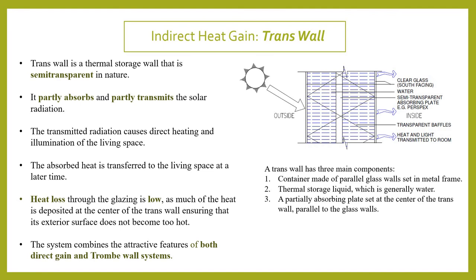The last technique is the transe wall, which is another form of indirect heat gain. Looking at a section: on the extreme south exterior you have a glass, then water is stored, after that a semi-transparent absorption plate — a perspex — is placed, then more water, and then another glass. It is like a sandwich of glass, water, perspex, water, and glass. Heat is absorbed by the outer glass, transferred to the adjacent water, and via the perspex is transferred to the water on the right-hand side, which then transmits the heat to the interiors.